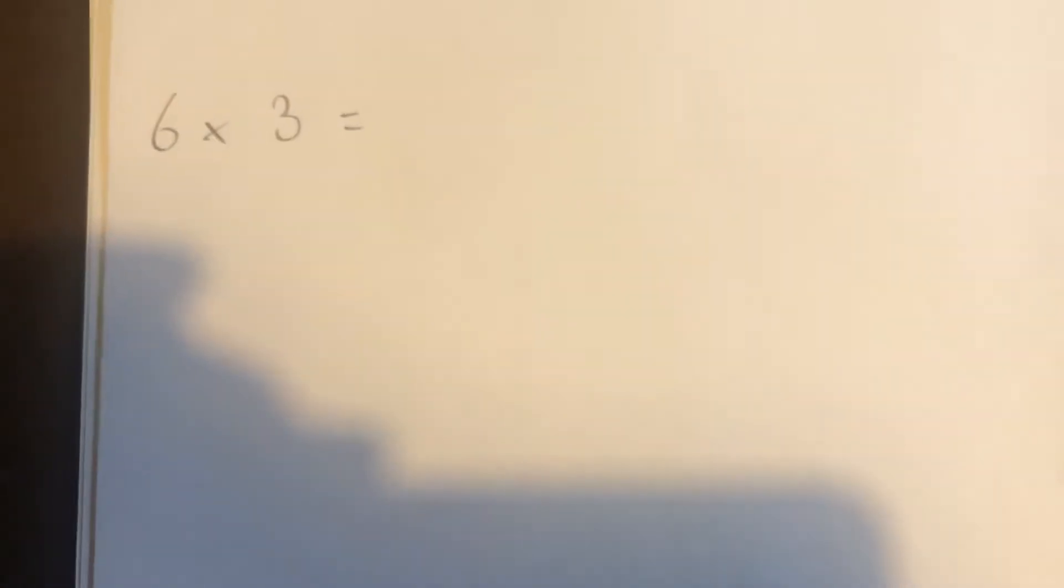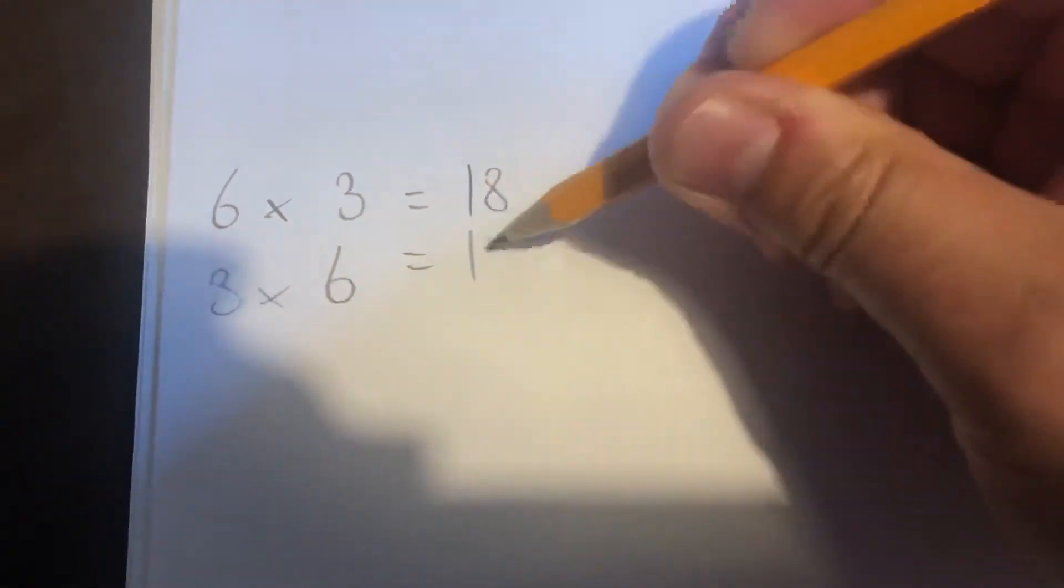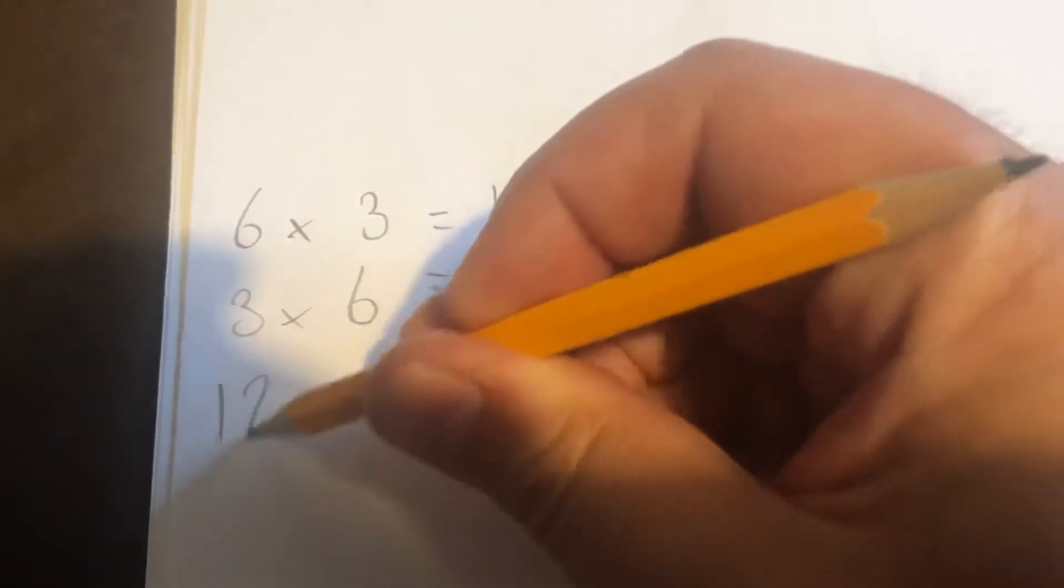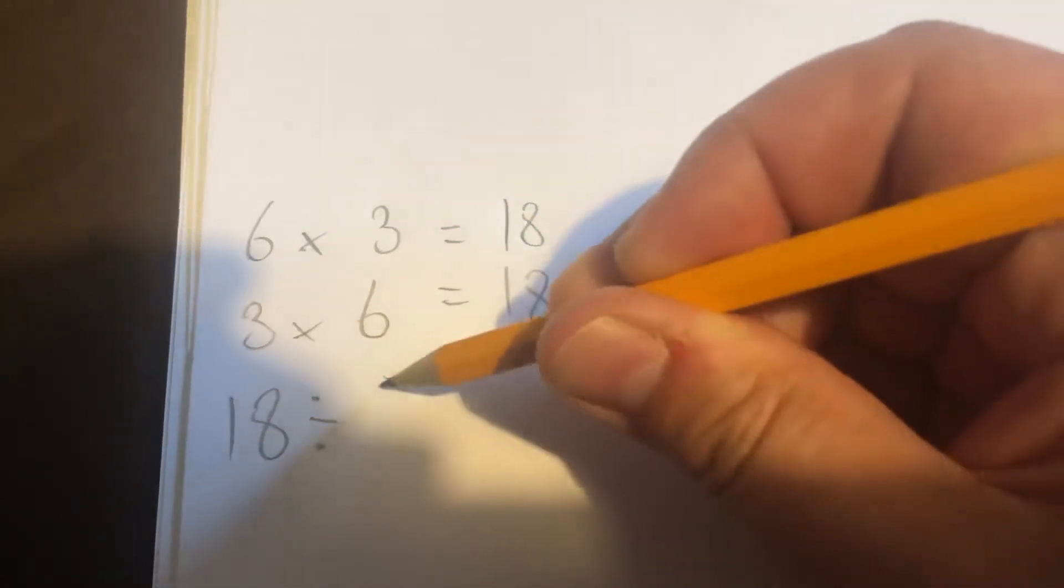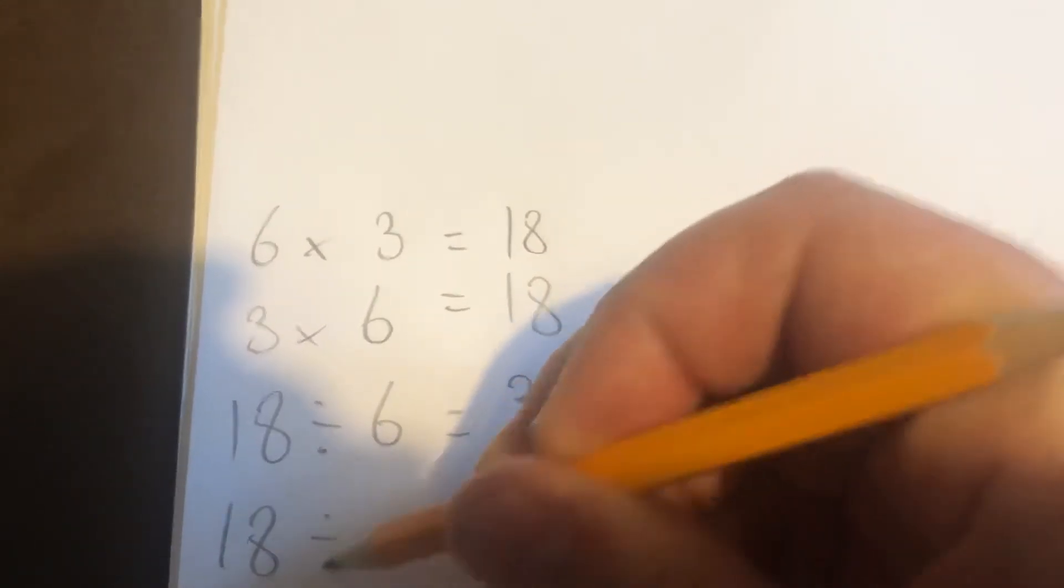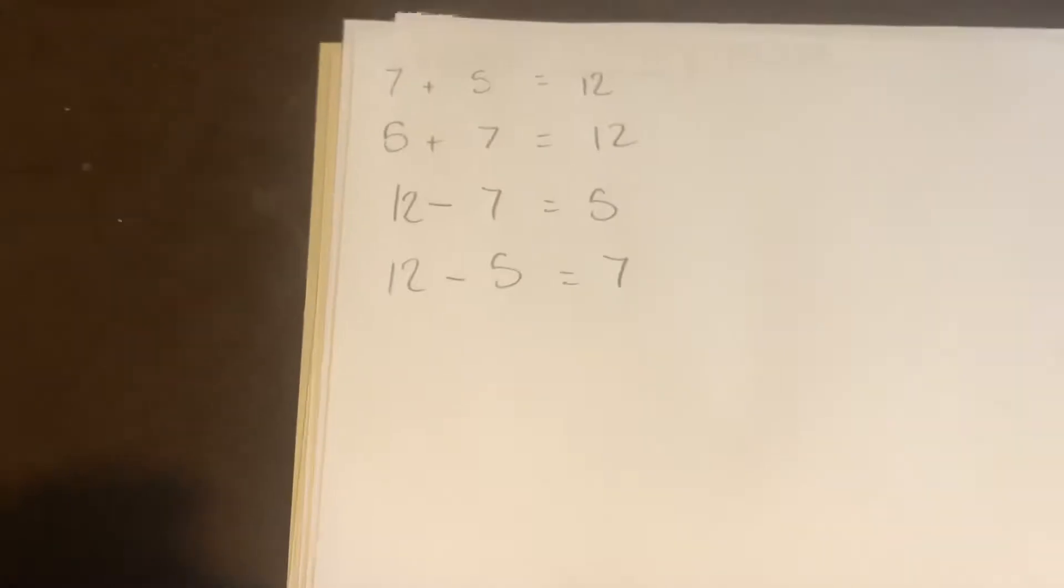Works the same with multiplication. So 6 times 3 is 18, I could write it the other way, 3 times 6 is also 18. Or I could do the inverse: 18 divided by 6 equals 3, or 18 divided by 3 equals 6. We'll use both of these to help with the inverse.